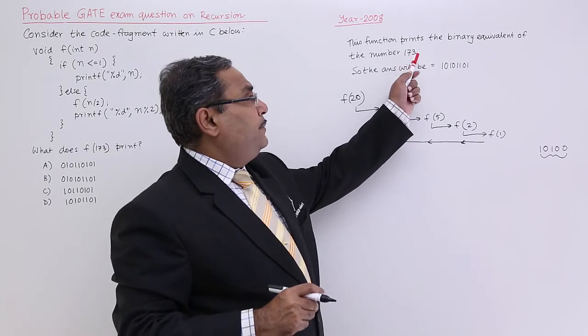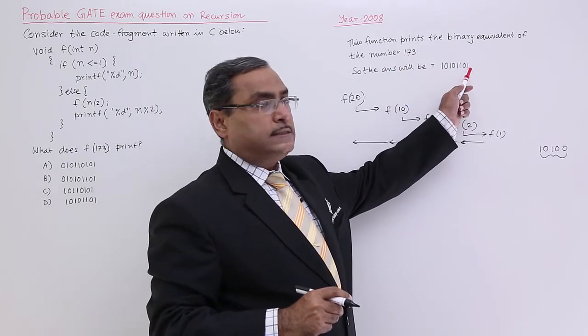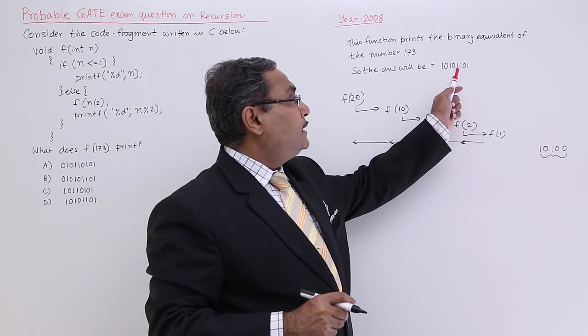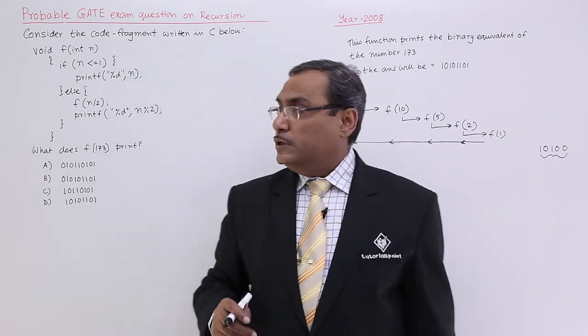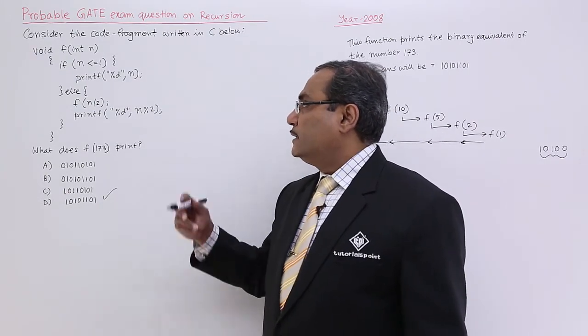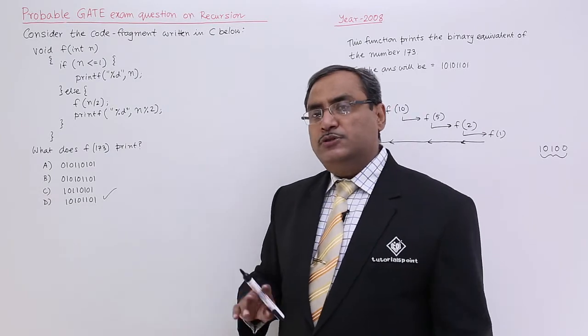Similarly, for 173, the binary equivalent is this. That should be the answer 10101101. That will be the answer. In this way, the question can be solved.